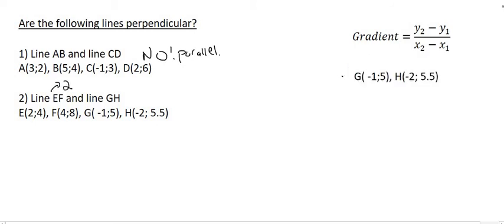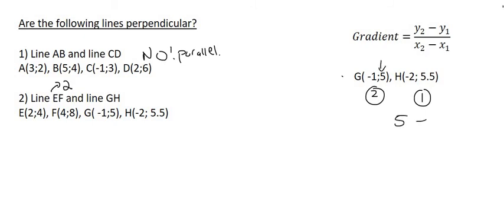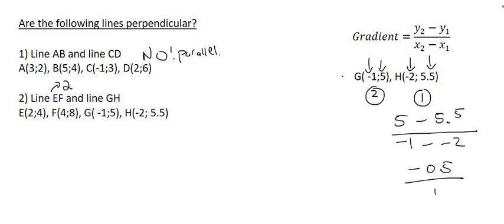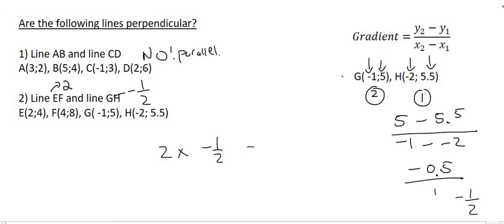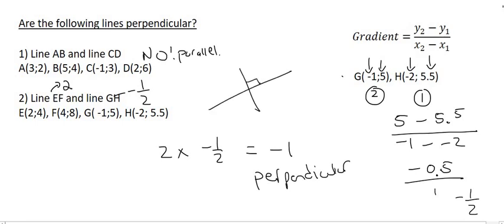Let's work out the gradient of GH. I'm going to call G point number 2 and H point number 1. The y value of point 2 is 5 and the y value of point 1 is 5.5. The x value of point 2 is minus 1 and the x value of point 1 is minus 2. At the top you get negative 0.5, and at the bottom you get 1, giving an answer of negative a half. So GH's gradient is negative a half. Multiplying the two gradients together: 2 times negative a half gives minus 1. Since the product is minus 1, lines EF and GH are perpendicular, meaning they cross each other at exactly 90 degrees.